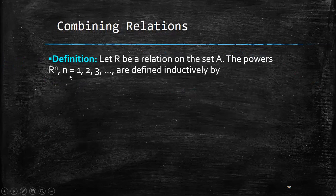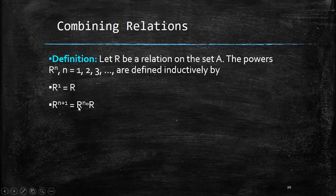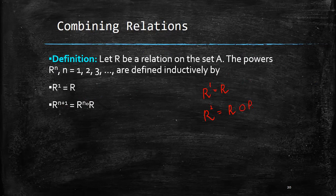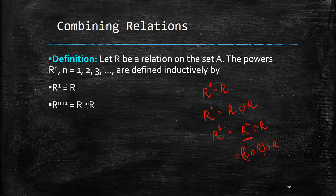Now, suppose R is a relation on set A. The powers R^N for N = 1, 2, 3, and so on are defined inductively: R^1 = R, and R^(N+1) = R^N ∘ R. So R^2 = R∘R, R^3 = R^2∘R = R∘R∘R, and so on. The number of times we write the composite equals the power.